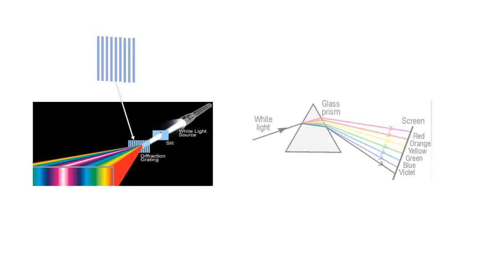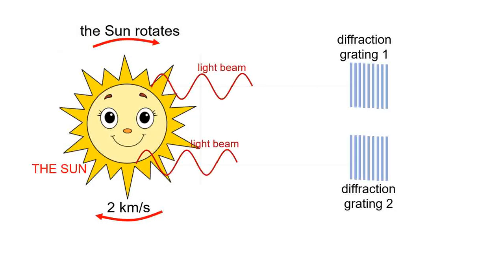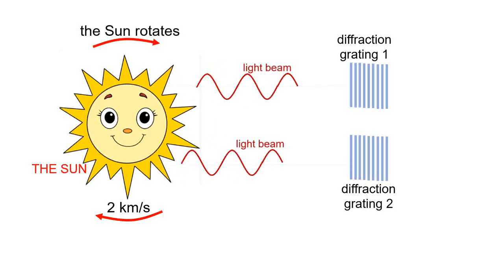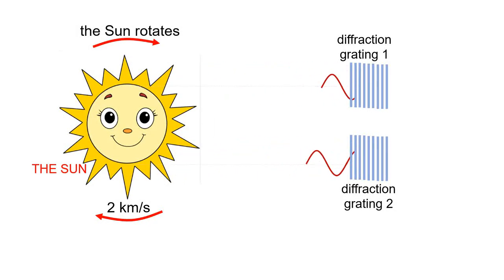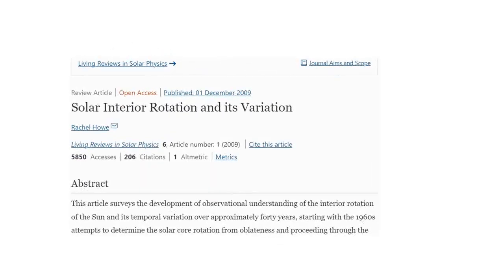The wavelength is measured in two ways: firstly with a diffraction grating and secondly with an optical prism. When we measure the wavelength of light with a diffraction grating, we measure a different wavelength in the light coming from one edge of the sun than from the other edge. The difference is due to the different speeds of the light source. The measurement is described in the article, 'Solar Interior Rotation and Its Variation.'